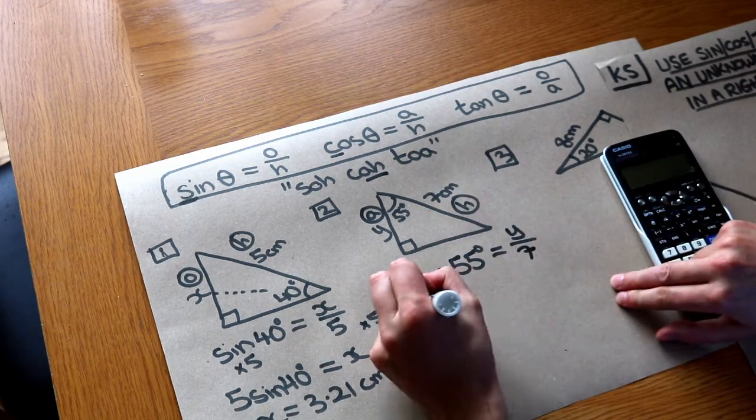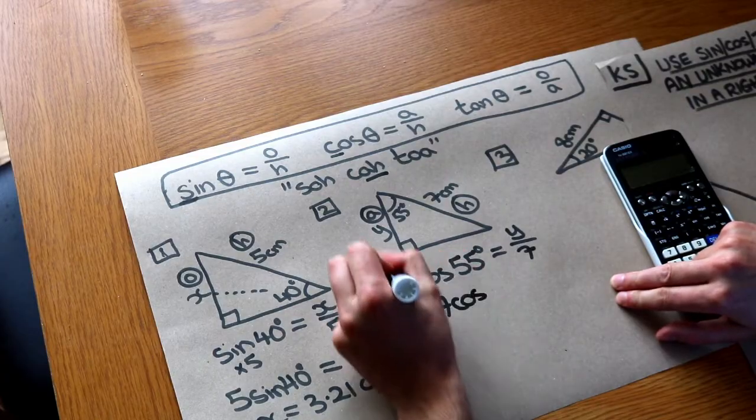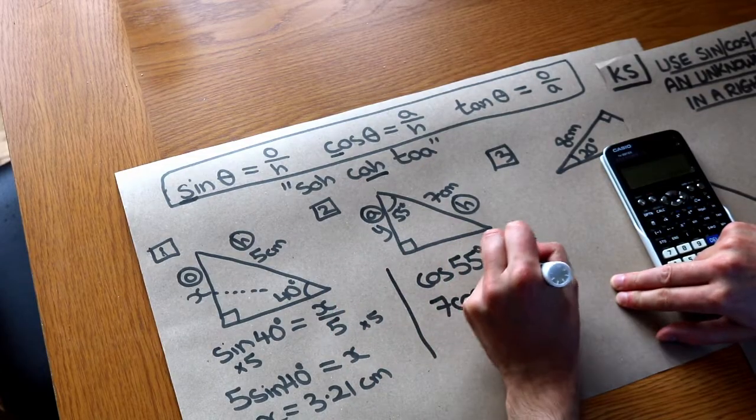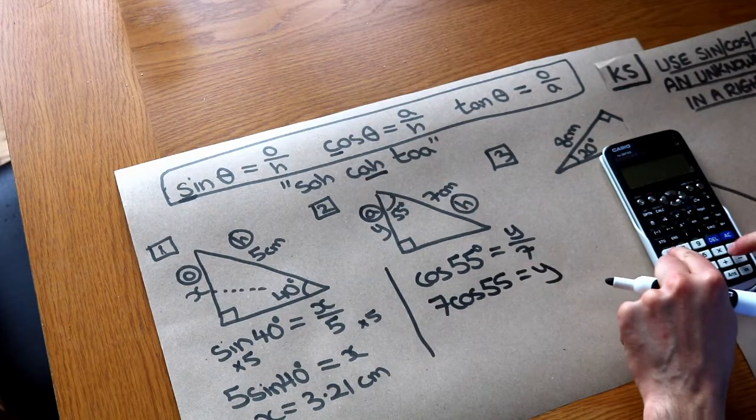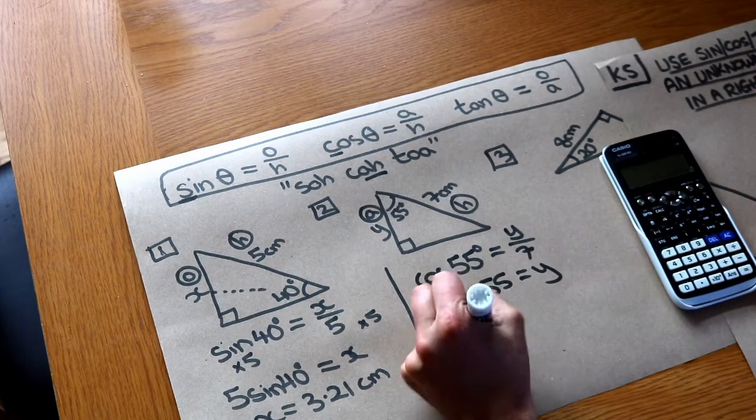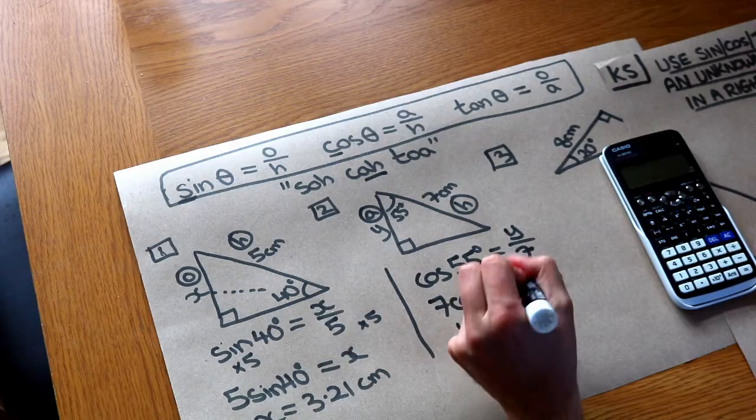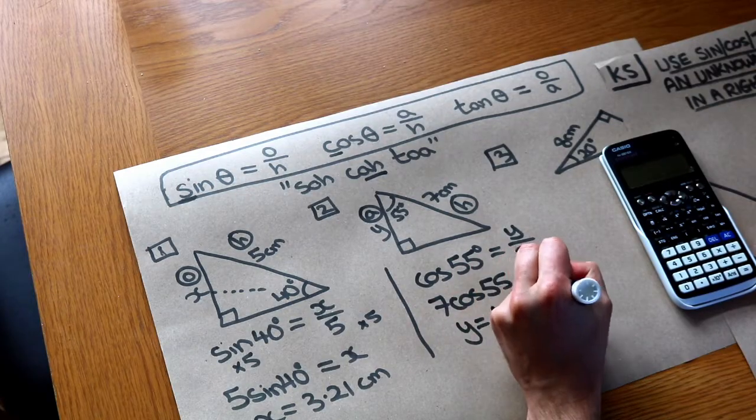Now we want to get rid of that over 7, so times both sides by 7. And then again on our calculator 7 cos 55, and that gives us Y is equal to 4.02 centimeters to 3 significant figures.